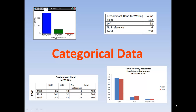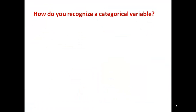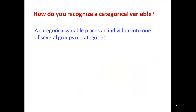This video is on working with categorical data. How do you recognize a categorical variable? A categorical variable places an individual into one of several groups or categories. By individual, it could be a person, an object, an animal, etc.